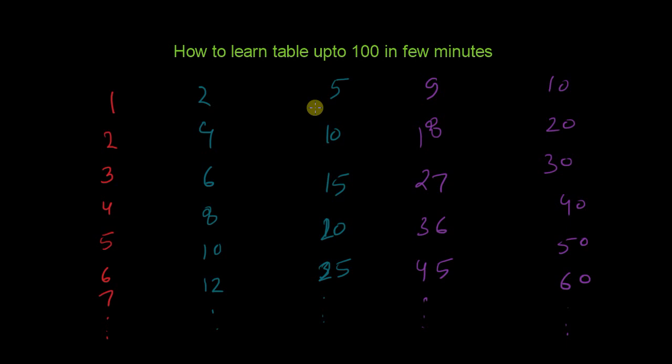So when somebody asks you what is the table of 50, just remember the table of 5. When somebody asks what is 50 times 2, you know that 5 times 2 is 10, then add a 0. It becomes the table of 50.